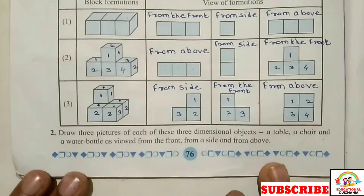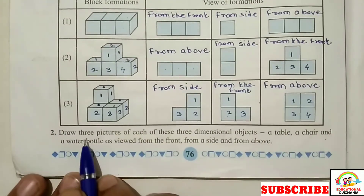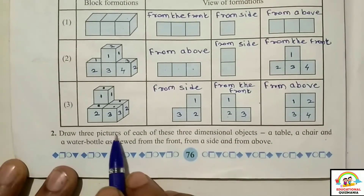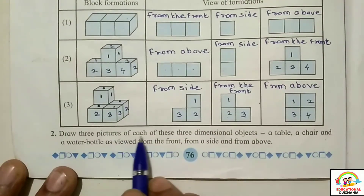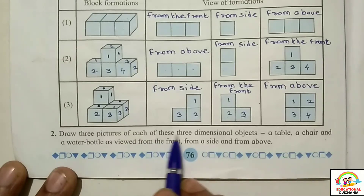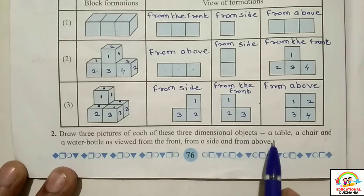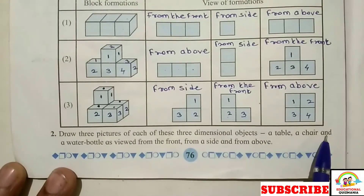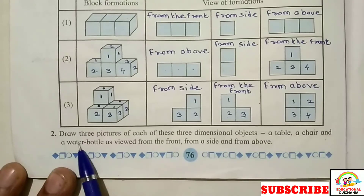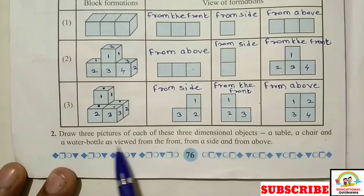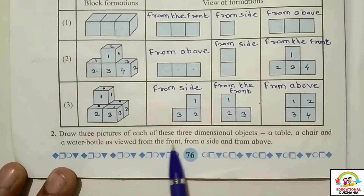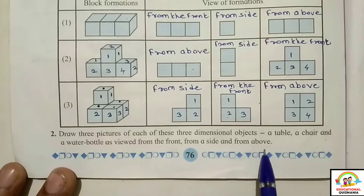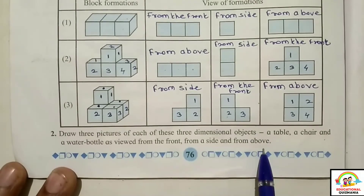Question Number 2: Draw three pictures of each of these three-dimensional objects — a table, a chair, and a water bottle — as viewed from the front, from a side, and from above.